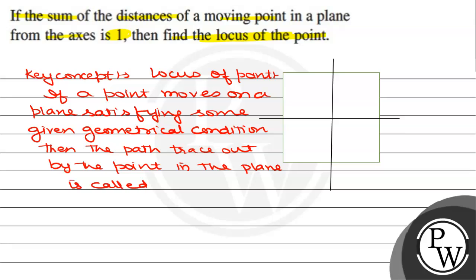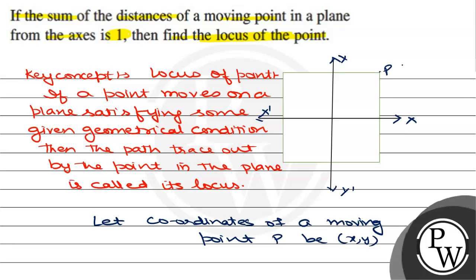Now let the coordinate of a moving point P be (x, y). We have a point P(-x, y), so we have a point (-x, y).